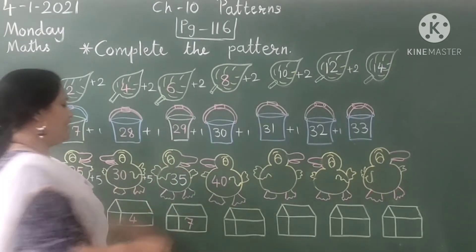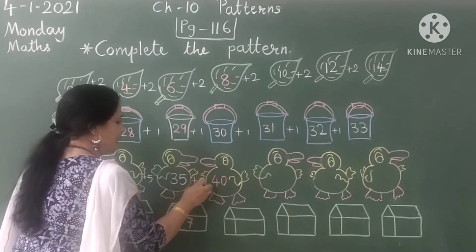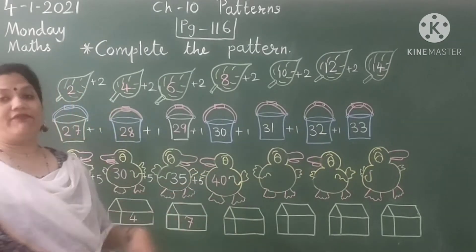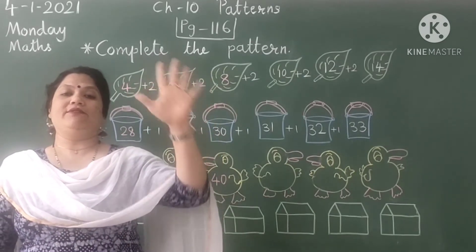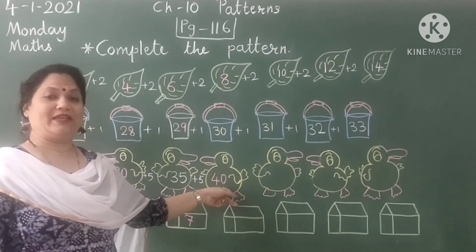In 35, let's add 5. So 35 plus 5 is 36, 37, 38, 39 and 40. As you can see.